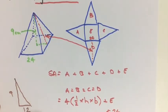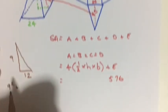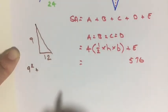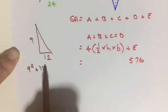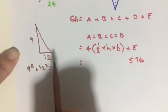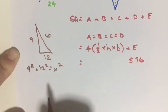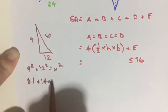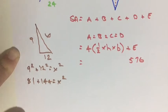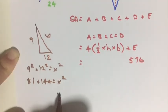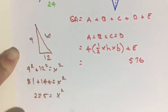And we know the base length is 12. So if we use Pythagorean theorem we can say 9 squared plus 12 squared is going to equal x squared. So 81 plus 144 is equal to x squared. x squared equals 225, so x is going to equal 15.